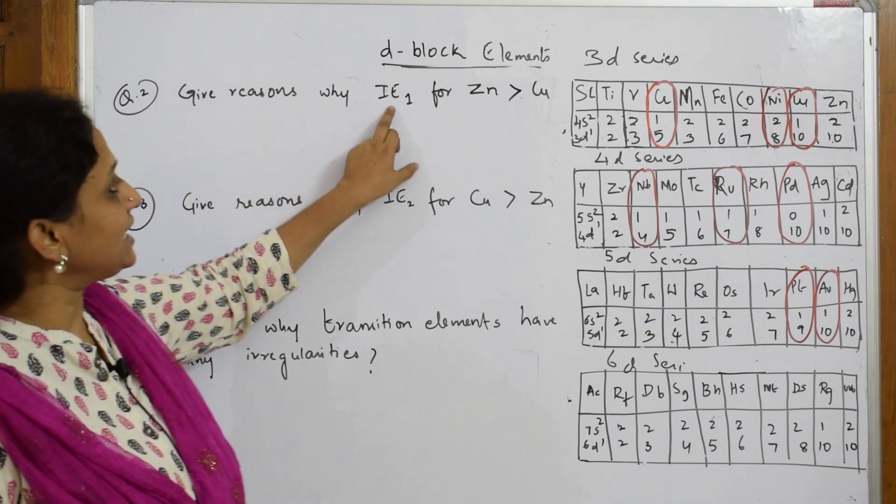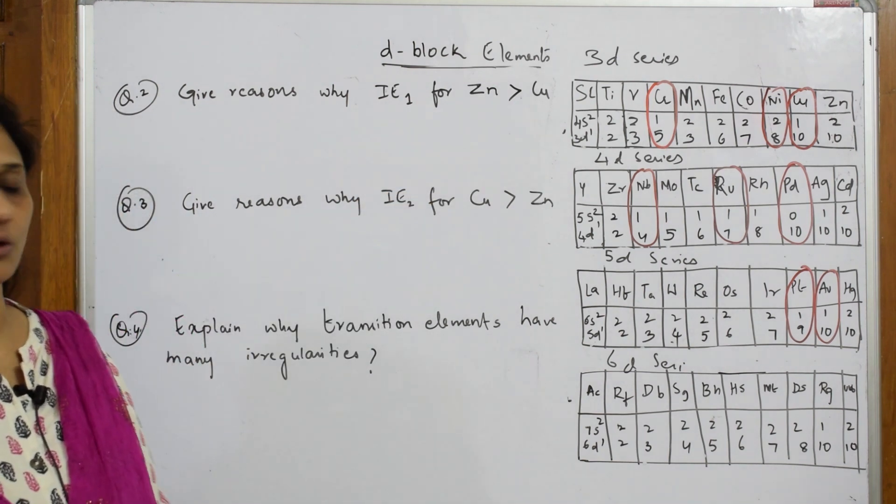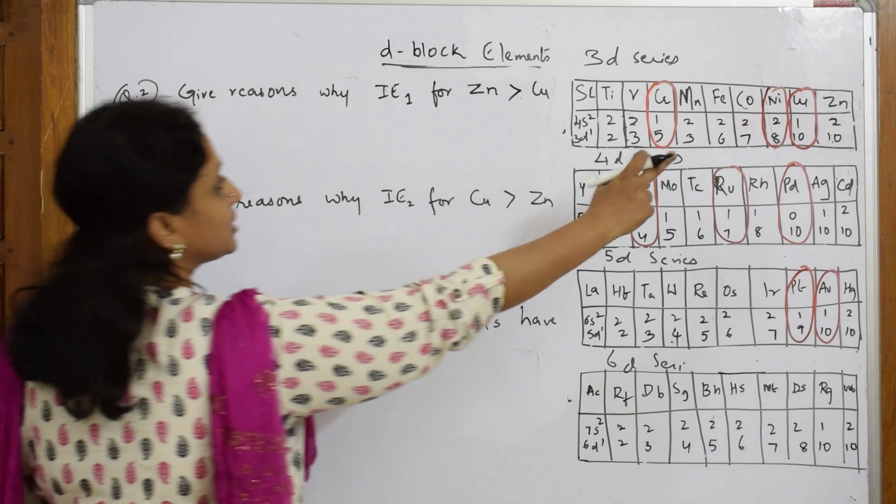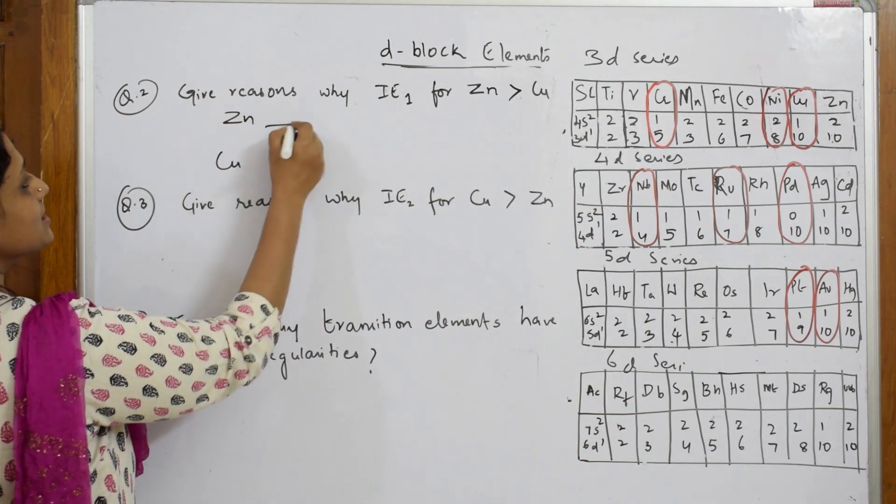Now they said give reason why IE1 for zinc and copper - why is zinc having more IE even than copper? Let us see the configuration. They've asked me to compare zinc and copper.